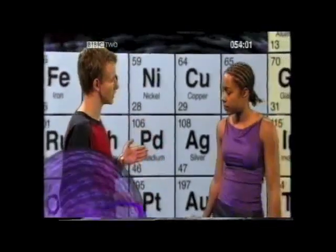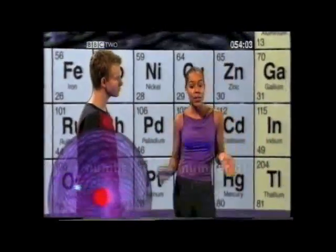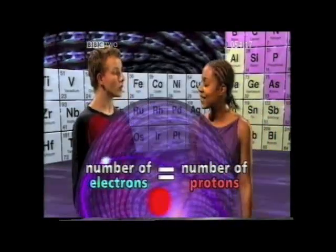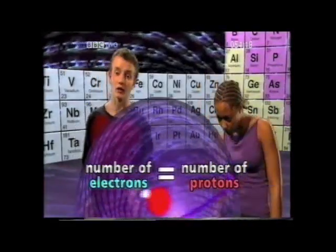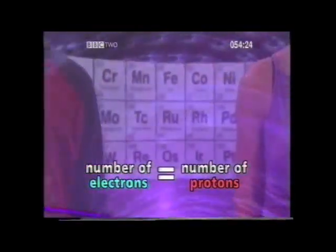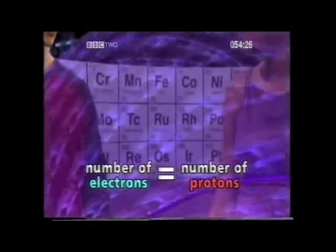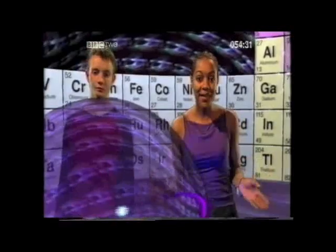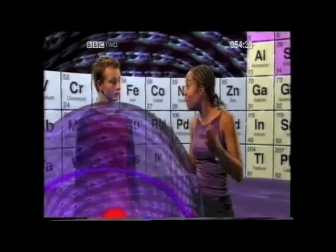But what about the number of electrons in an atom? You need to remember that in an atom, the number of electrons is always the same as the number of protons. Is that because electrons are negatively charged and protons are positively charged? So the charges are balanced in an atom? That's right. So the atomic number of an atom also tells us how many electrons are in an atom. And in this hydrogen atom, it's got one proton, so it's also got one electron.